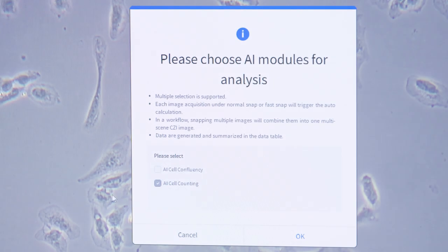Here's how it works. Start by selecting the cell confluency module in Zeiss LabScope.